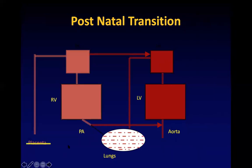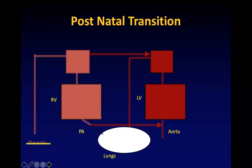Immediately after birth the cord is clamped and the lungs expand because the baby starts crying. With the expansion of the lung, the lung fluid disappears and this opens up the pulmonary capillaries. As the pulmonary capillaries open up, pulmonary artery pressures come down — there is a drop in pulmonary vascular resistance, drop in right ventricular pressure, and drop in right atrial pressure. But there is a rise in left-side pressures because of cord clamping — aortic pressures, left ventricular and left atrial pressures all increase.